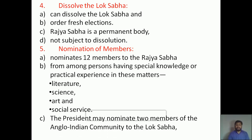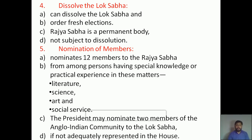The President may also nominate two members of the Anglo-Indian community to Lok Sabha. So to Rajya Sabha he can appoint 12 members, and to Lok Sabha he can appoint two members. But the appointment of two members to Lok Sabha is on a particular condition: he must feel that there is no adequate representation from that particular community, or in other words, that there are no Anglo-Indian representatives in Lok Sabha. Only in those cases can he appoint two Anglo-Indian community members to Lok Sabha.